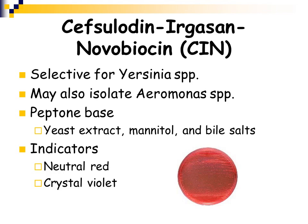CIN, or cefsulodin-irgasan-novobiocin agar, is very specifically used when you suspect a Yersinia species, as it is selective for Yersinia. However, Aeromonas will also grow on this agar. It's a peptone base with yeast extract, mannitol as the carbohydrate, bile salts as a selective chemical, and neutral red and crystal violet.